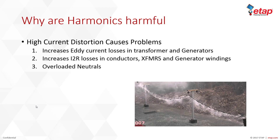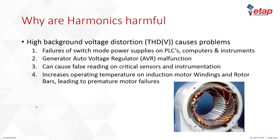Let's go over high current distortion and the problems it causes, and then we'll get into high voltage distortion. For high current distortion, it mainly increases eddy current losses in transformers and generators. It also increases resistance losses in conductors, transformer and generator windings, and can overload neutrals.